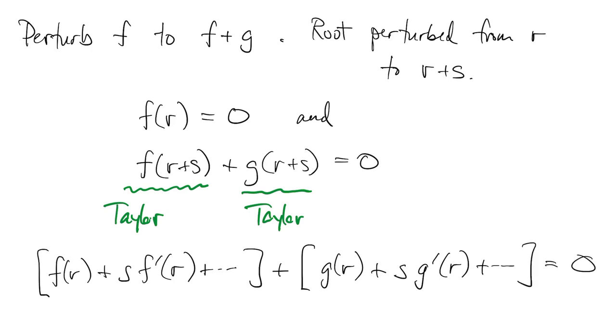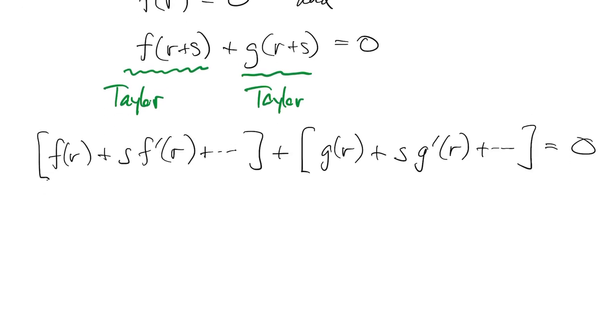By definition, again, f of r is equal to zero. And when we look at this, this is the product of two small things, so we're going to neglect that. When we do that, we can solve for s. So this is our perturbation to the root in response to the perturbation of the function.